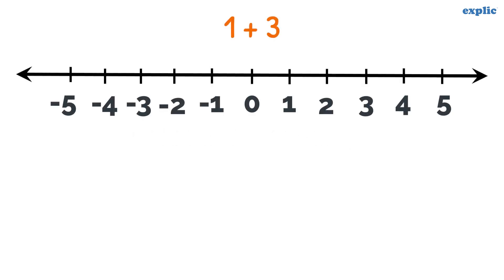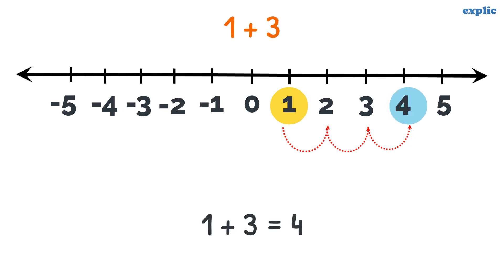To add 3 into 1, first locate 1 on the number line. Then move 3 steps or units in the right direction. The number we land on is the answer.